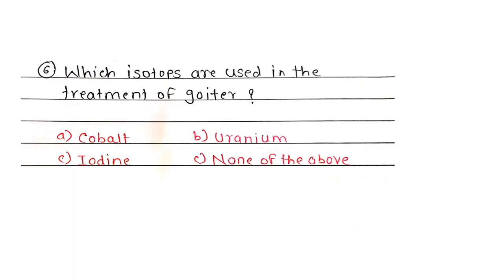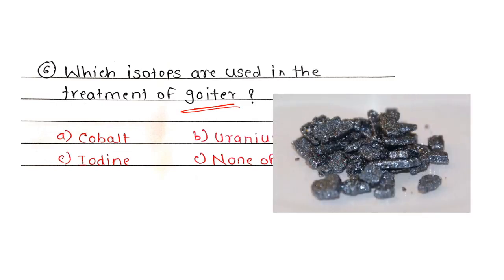Sixth question: Which isotopes are used in the treatment of goiter? Correct answer, Option C. The isotopes of iodine are used for the treatment of goiter.